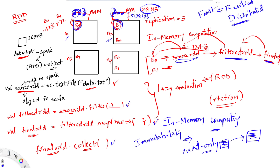The 'R' in RDD stands for resilient, meaning RDDs are fault tolerant. If an RDD is lost from memory, Spark uses the DAG — which holds the full lineage information — to recreate it. For example, if filteredRDD is lost, Spark looks at the lineage, finds sourceRDD, and recreates filteredRDD from it. In short, RDD tracks data lineage information to recover lost data automatically on failure, which is called fault tolerance and resiliency.